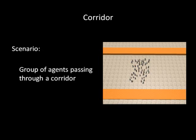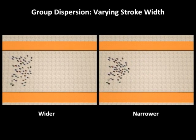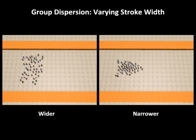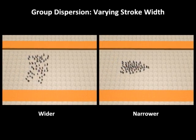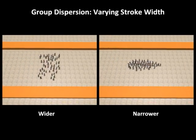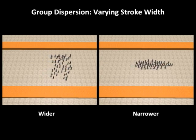This simulation shows a group of agents moving through a corridor. The width of the user-drawn stroke is specified at runtime and allows the user to effectively control the dispersion of agents along the trajectory.